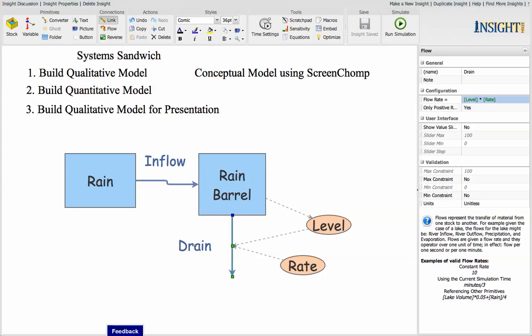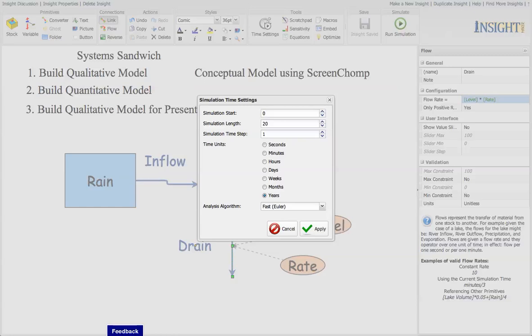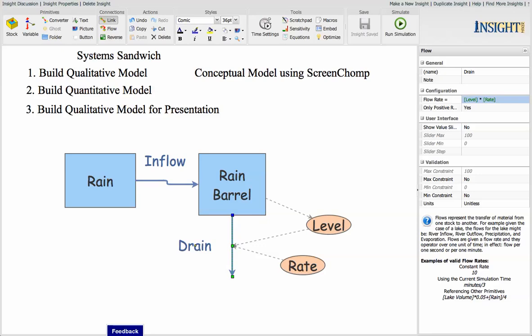So now we have our equations, we have our initial values, and we have all the stocks and flows for our model. Let's go to the time settings. How long do we want to run the model? We can run it for 20 minutes. Why don't we pick 20 minutes? Now the simulation time step should be a number less than 0.25. I'm going to put in 0.125 here. And we can use the more accurate RK4, which stands for Runge-Kutta 4, and apply that. So that's the time settings.